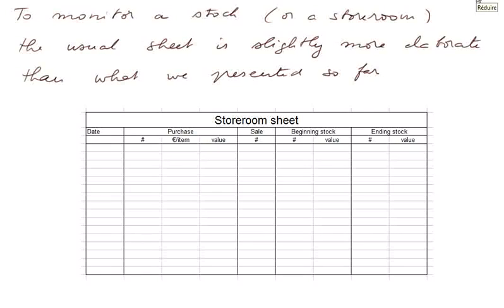To monitor a stock or a storeroom, the usual sheet is slightly more elaborate than what we presented so far. Here is a more elaborate form for the storeroom sheet. It has a column for date, then three columns for purchases — the number of items, the price per item, and therefore the value of the purchase — a column for sales showing just the number of items sold, because in stock valuation we don't care about the selling price. And we finish with beginning stock: number of items and value; and ending stock: number of items and value.